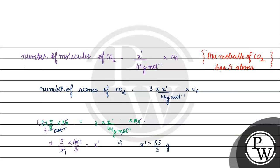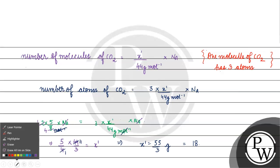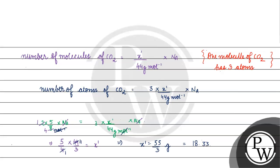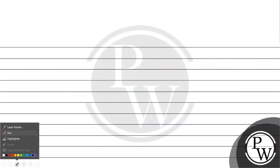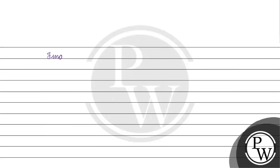55 by 3 grams equals 18.33 grams. The final answer for this question is 18.33 grams of carbon dioxide contains the same number of atoms as 20 grams of oxygen. I hope you understood it well. Thank you and all the best!